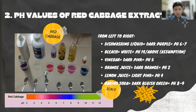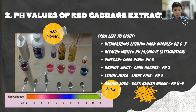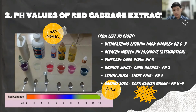For the orange juice, it turned dark orange. Based on the scale, it has a pH value of 2, so it's a very strong acid. For the lemon juice, the color turned light pink. Based on the scale, it has a pH value of 4, so it's somewhat a weak acid. For the baking soda, the color turned dark bluish green. Based on the scale, it has a pH value of 8 to 9, which is a weak alkaline.